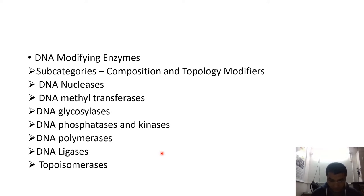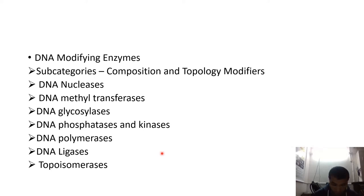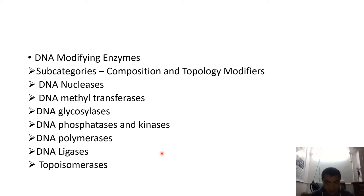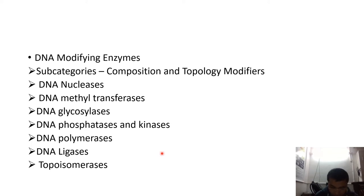Endonucleases are categorized as nucleases that cut the DNA molecule at internal sites. For example, S1 nuclease cleaves single-stranded DNA, and a single-strand nick is produced in double-stranded molecules by S1 nuclease. DNase I cleaves both double-stranded DNA as well as single-stranded DNA.